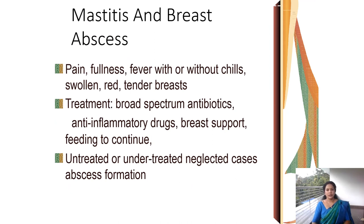The next condition is mastitis and breast abscess. If sore nipple or engorgement of the breast is not treated, it may worsen and produce mastitis, which may finally produce breast abscess. Features of mastitis include pain, fullness of the breast, fever with or without chills, swelling and redness of the breast, and tenderness. Treatment includes broad-spectrum antibiotics, anti-inflammatory drugs, proper breast support, and encouraging the mother to continue feeding. If neglected, abscess formation will occur.